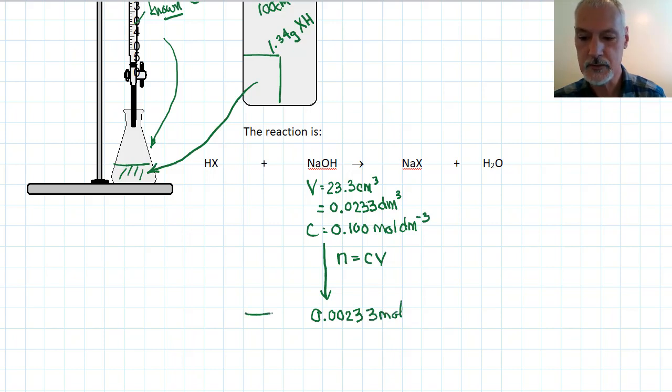From the reaction, we can see the ratio that exists between our unknown acid and our sodium hydroxide is 1 to 1. Therefore, present down here at the bottom was exactly the same number of moles, 0.00233 moles.